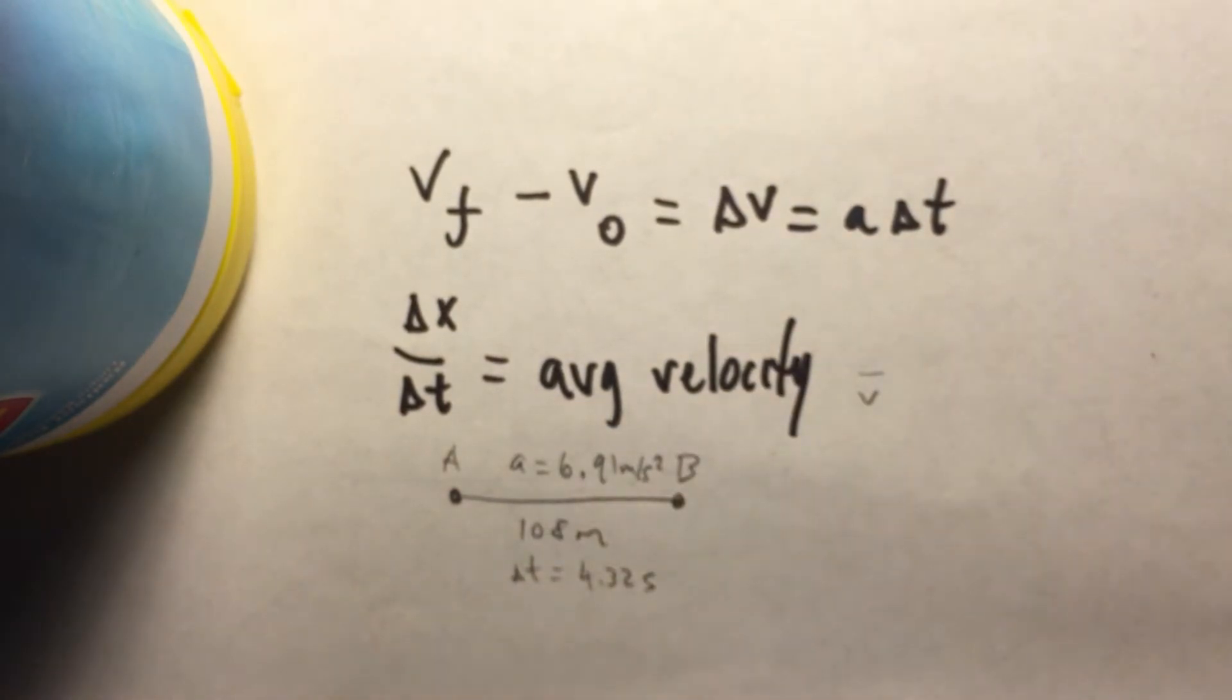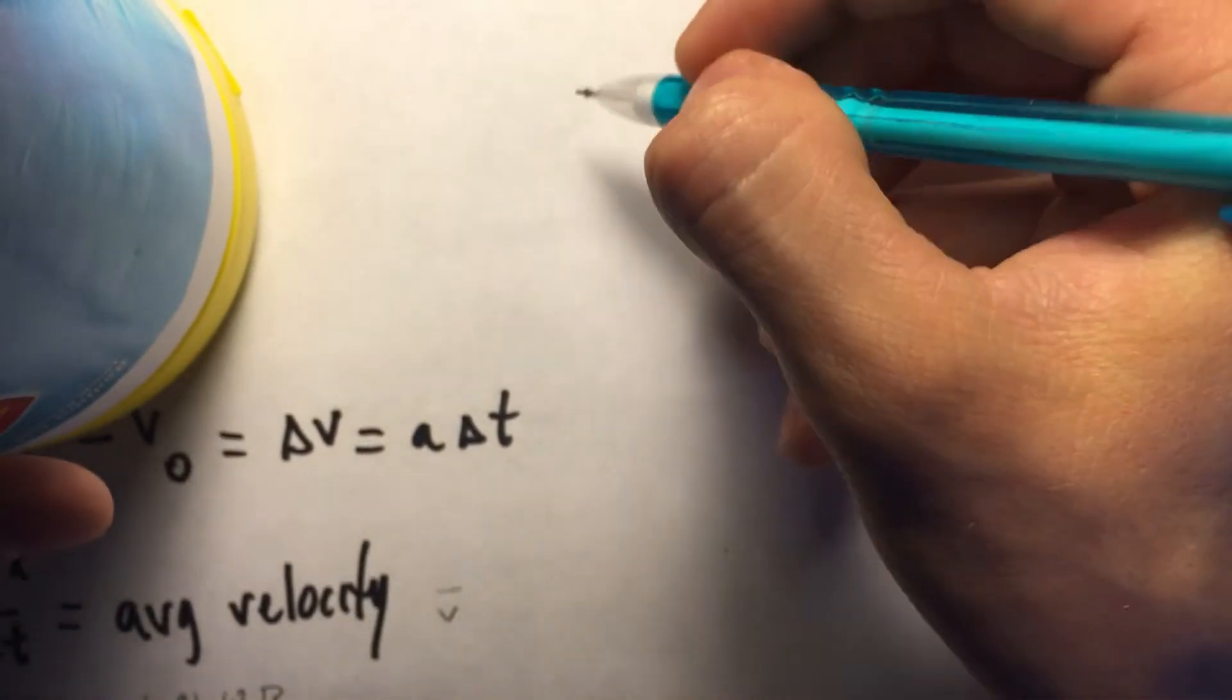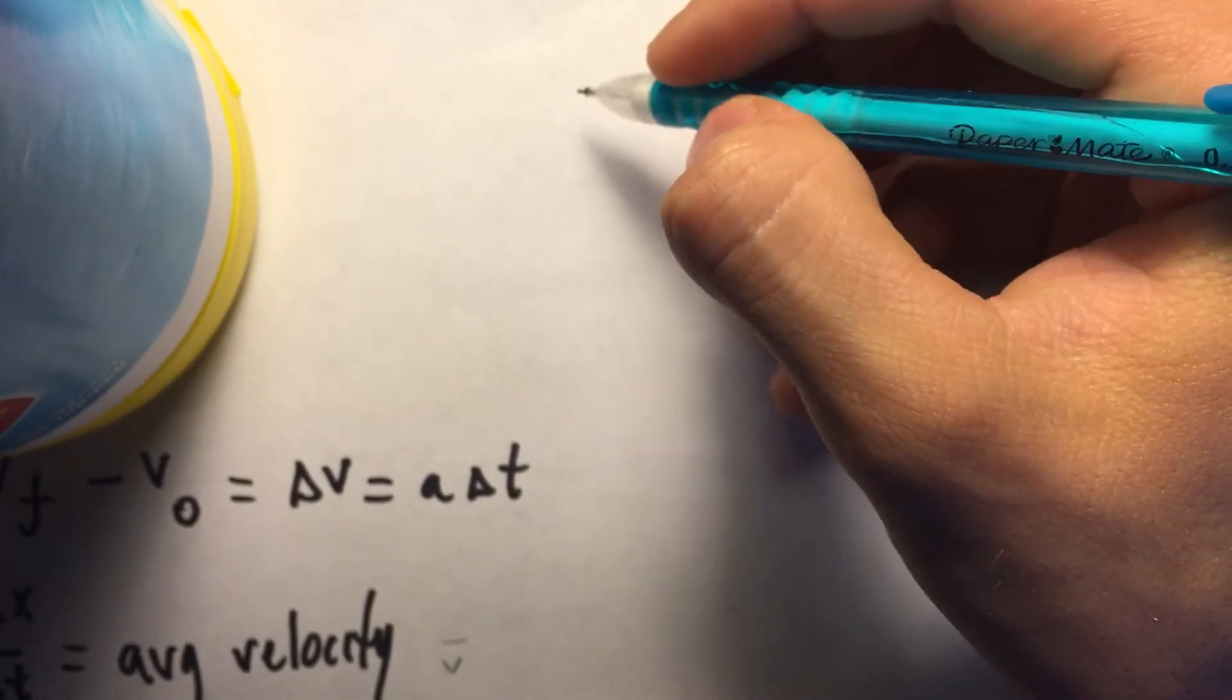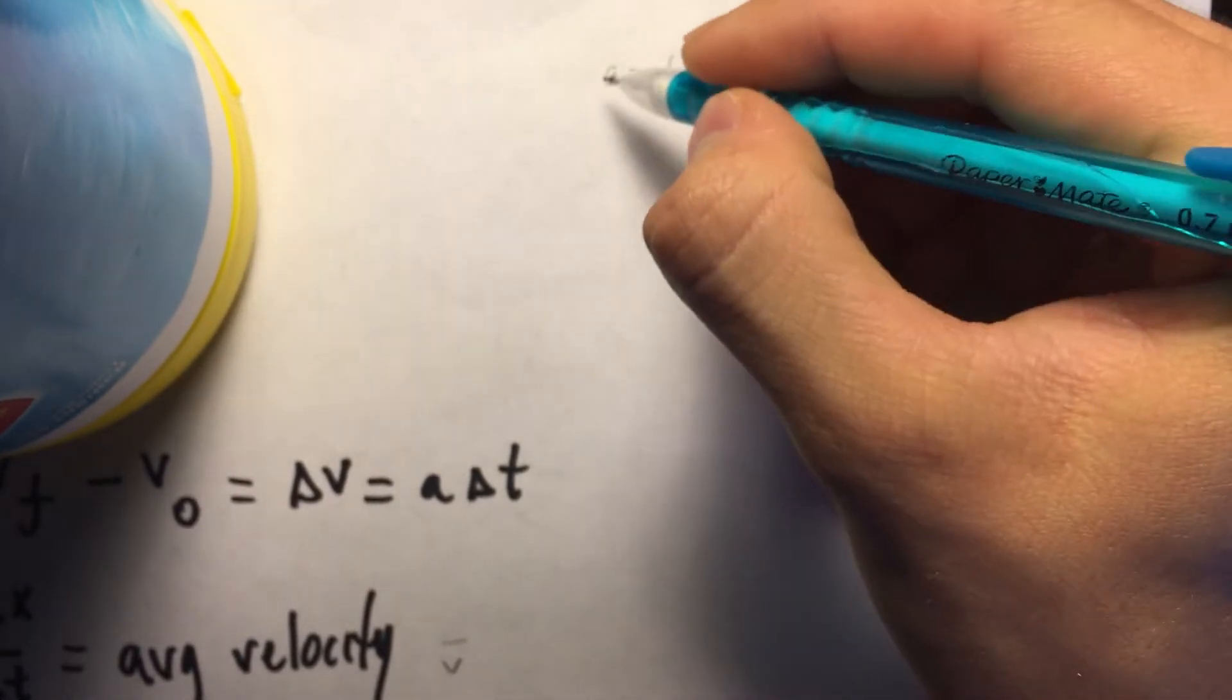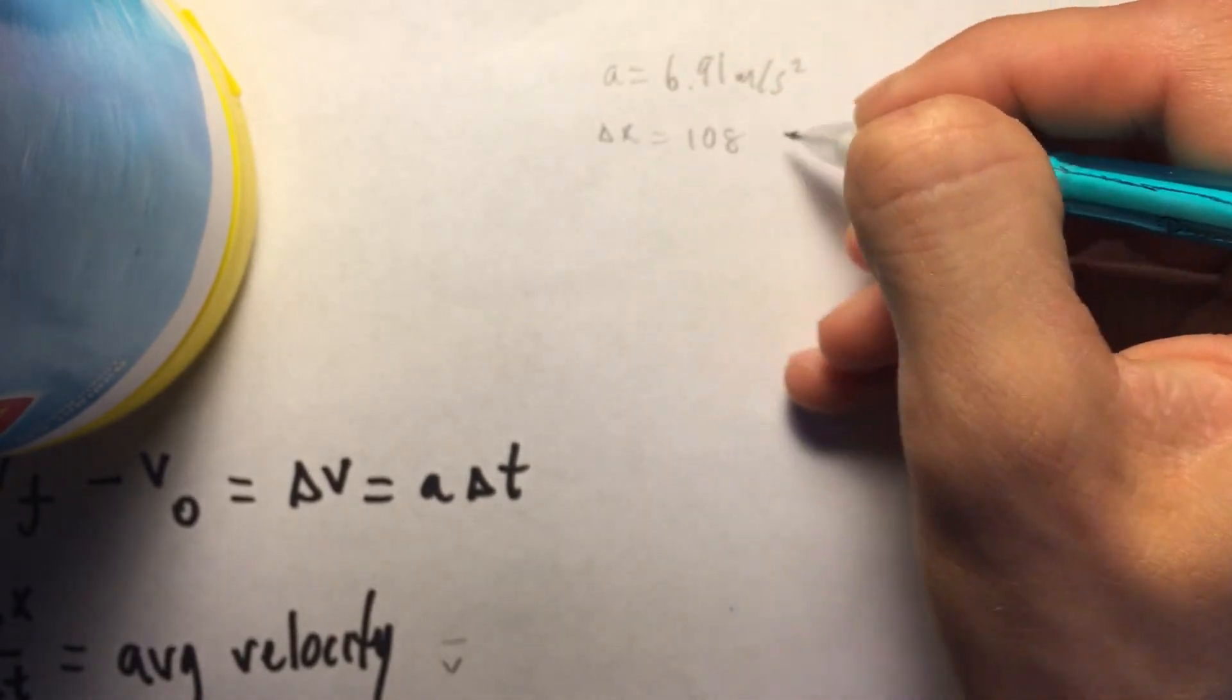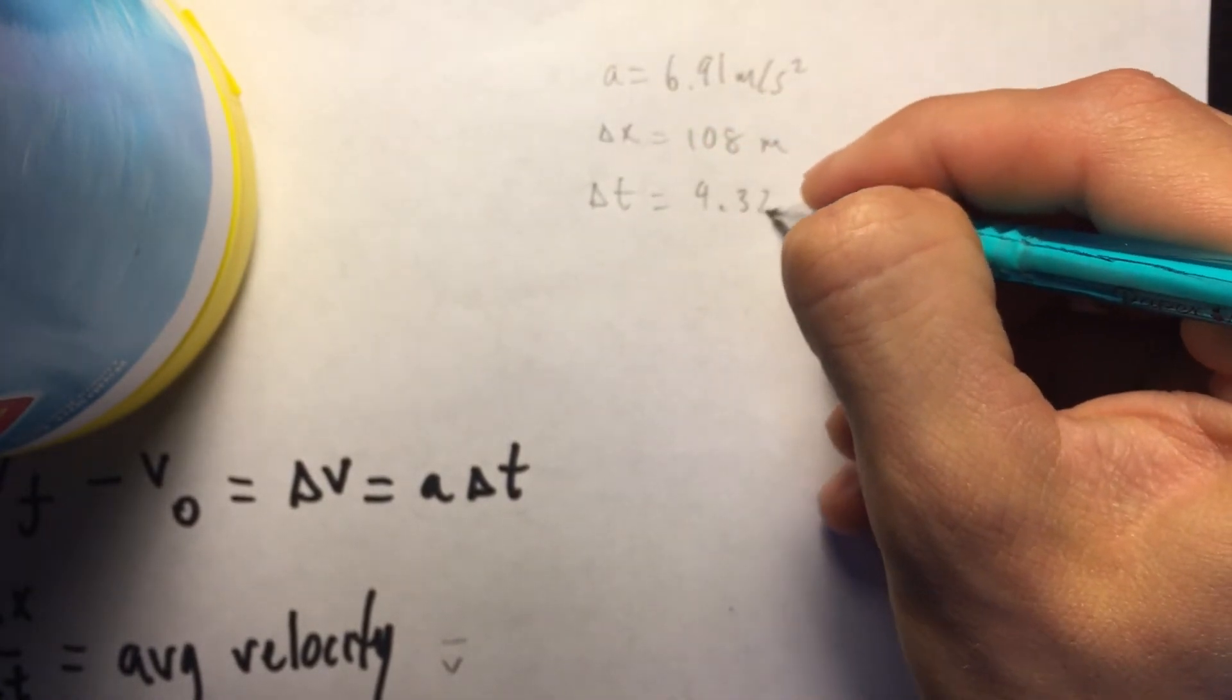Now, we go back to our kinematics equations, and we try to find one kinematics equation that gives us all of the values that the problem has given us. In order to do that, let's set some space apart to note every variable that we have. So, we have an acceleration of 6.91 meters per second squared. We have a change in x, which was given at 108 meters. We have a change in time, which was given as 4.32 seconds.